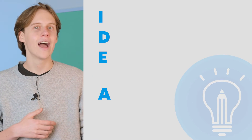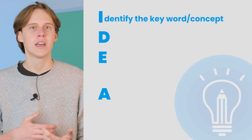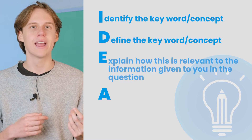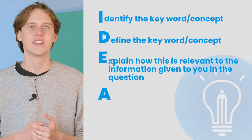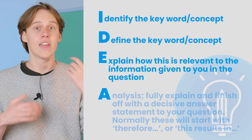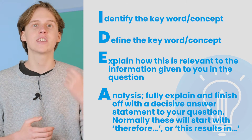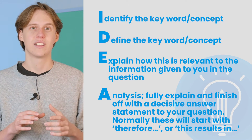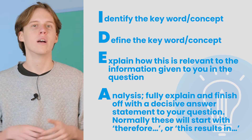It's a great idea to also get your answer structure down packed, and for this you can use the anagram IDEA. The I is for identify the keyword or concept. The D is for define this keyword or concept. The E is for explain how this is relevant to the information given to you in the question. And finally the A is for analysis — fully explain and finish off with a decisive answer statement, normally starting with 'therefore' or 'this results in'.